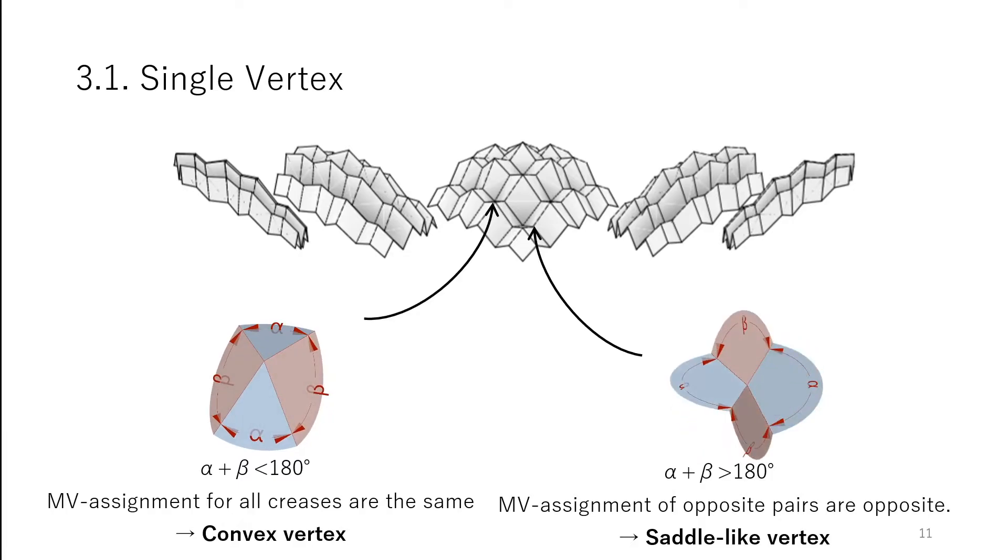When alpha plus beta is larger than 180 degrees, and thus the MV assignment of opposite pairs are opposite, we call them saddle-like vertices.